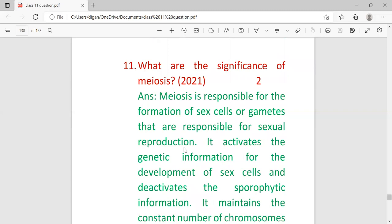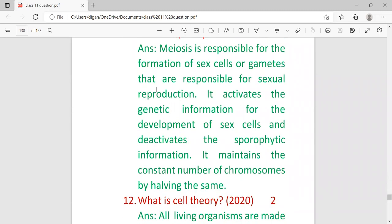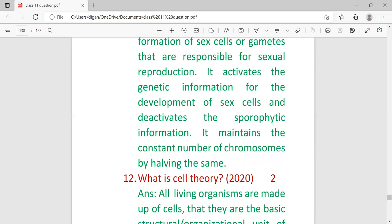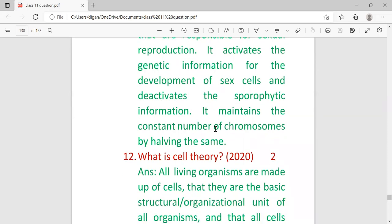Now come for the two mark questions. For two marks, these are the important questions. What are the significance of meiosis? Meiosis is responsible for the formation of sex cells or gametes that are responsible for sexual reproduction. It activates the genetic information for the development of sex cells and deactivates the sporophytic information. It maintains a constant number of chromosomes by halving the same.